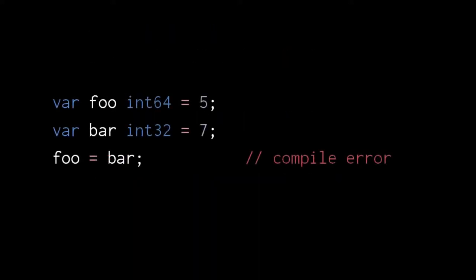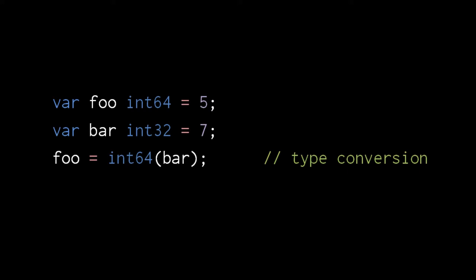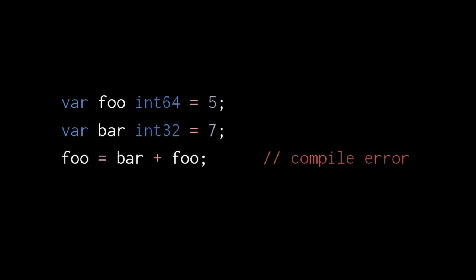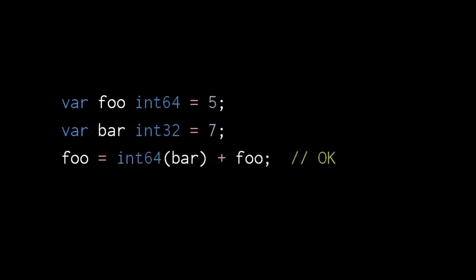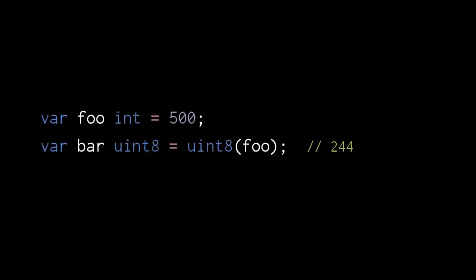Also understand that Go is serious about these number types all being separate types. You might think we should be able to assign an int32 variable to an int64 variable because all int32 values fit in the range of an int64, but Go will reject this assignment. To satisfy the compiler, we have to explicitly convert the int32 value to an int64, and only then is the assignment allowed. Similarly, we cannot perform arithmetic on two values of different types. Instead, we must explicitly convert the two values to a matching type. When converting from an int32 to an int64, the value is preserved, but in some conversions the value may end up distorted. When converting from an int to a uint8, many int values do not fit in the range of a uint8, and so the converted value won't necessarily be the same.